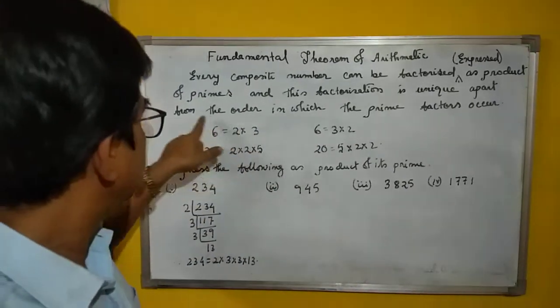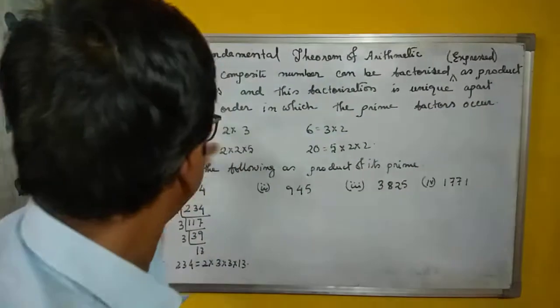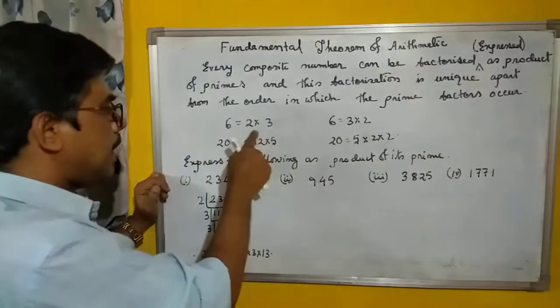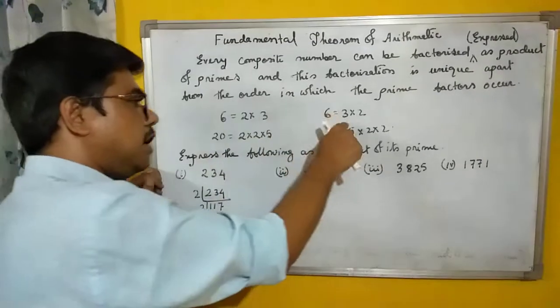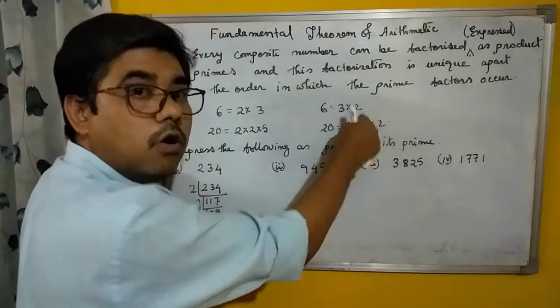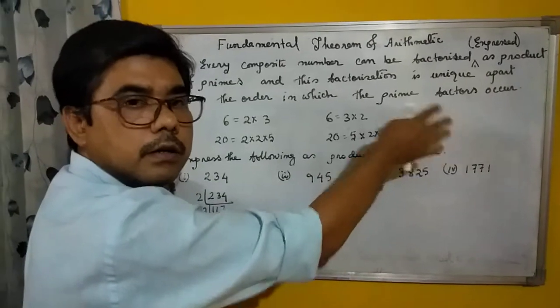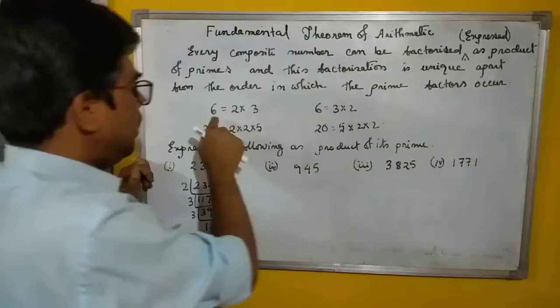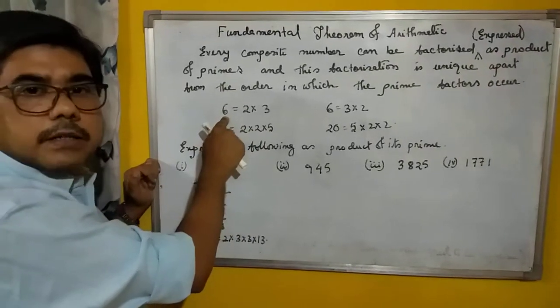And then, what? Apart from the order in which the prime factors occur. Yes, order - if I change the order, 2×3 will give 6, and 3×2 also gives 6. Order is not a matter. That is the fundamental theorem of arithmetic - a composite number can be expressed as a product of primes.